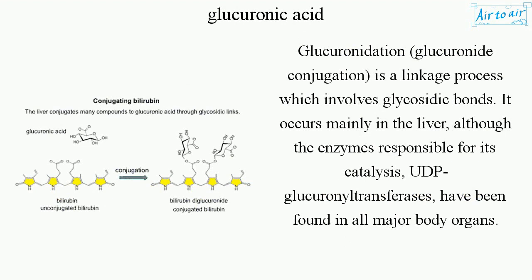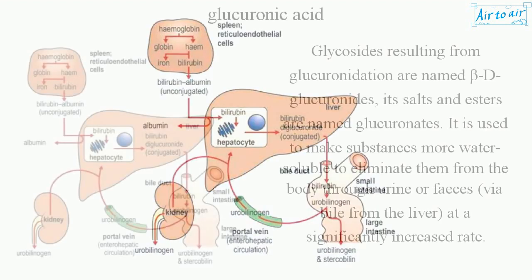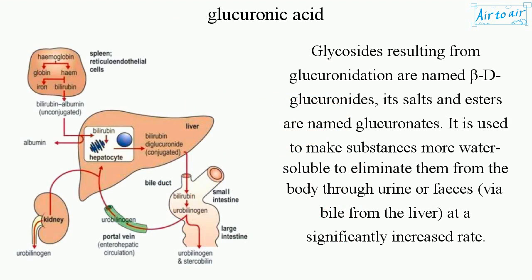Glucuronidation, or glucuronide conjugation, is a linkage process which involves glycosidic bonds. It occurs mainly in the liver, although the enzymes responsible for its catalysis, UDP-glucuronosyltransferases, have been found in all major body organs. Glycosides resulting from glucuronidation are named beta-D-glucuronides; its salts and esters are named glucuronates. It is used to make substances more water-soluble to eliminate them from the body through urine or feces, via bile from the liver, at a significantly increased rate.